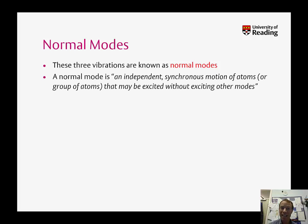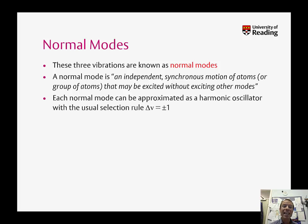A normal mode is defined as an independent, synchronous motion of atoms, or group of atoms, that may be excited without exciting other modes. So it is actually possible just to excite one particular vibration of a water molecule if you shine light of exactly the right wavelength on it. Each of these independent normal modes can be approximated as a harmonic oscillator, and then you have the normal harmonic selection rule: delta V is equal to plus or minus 1.